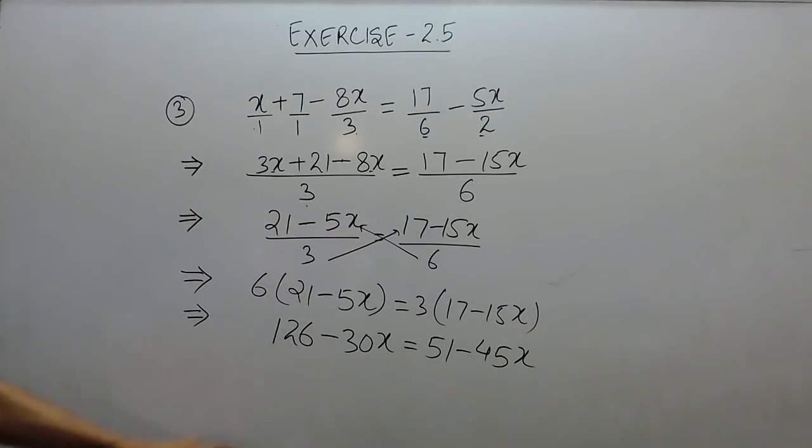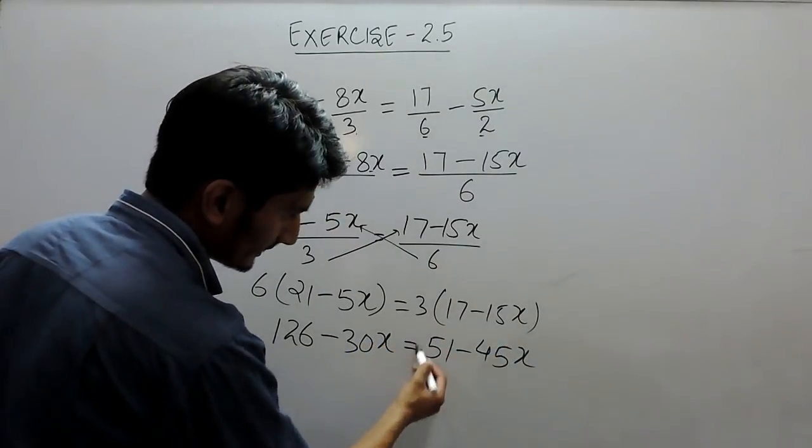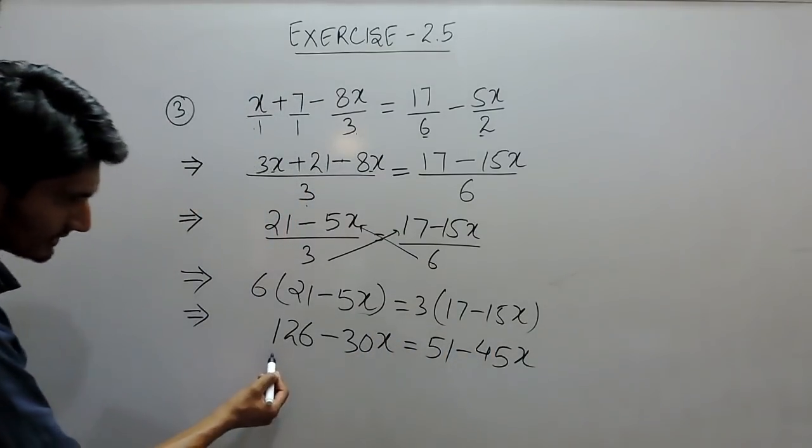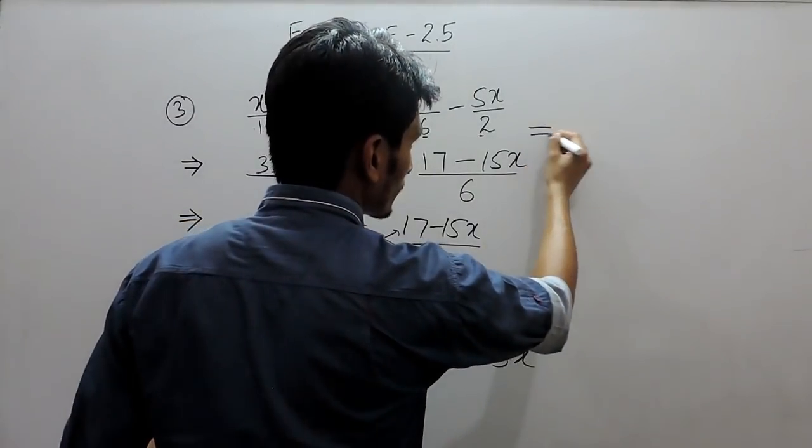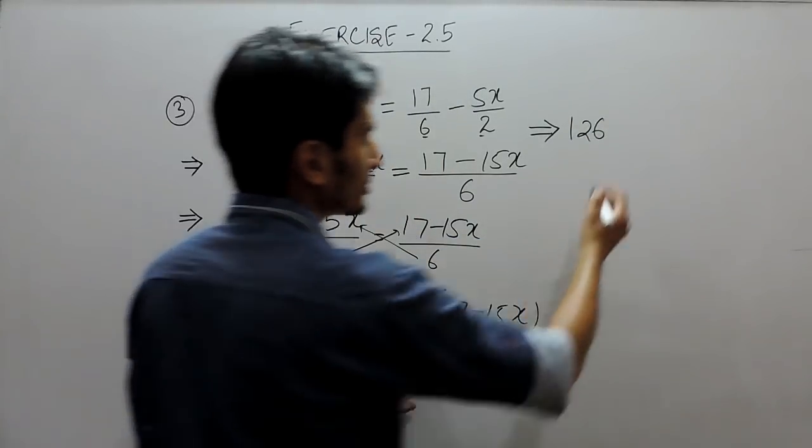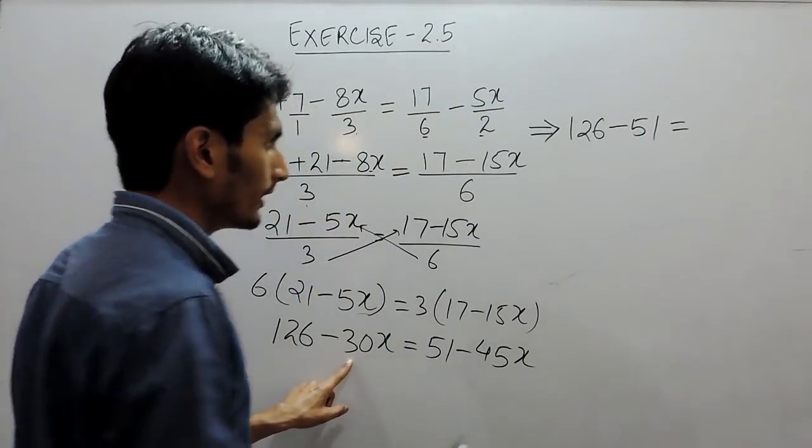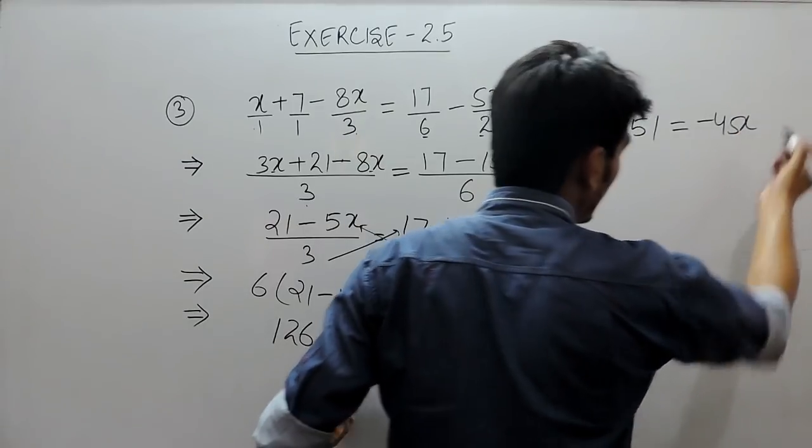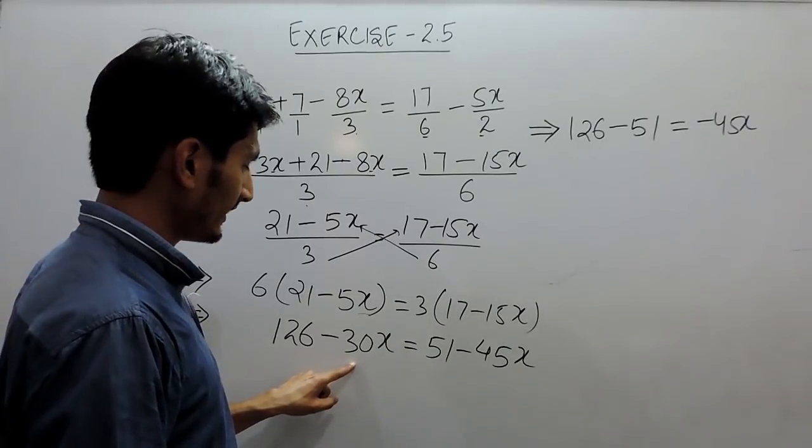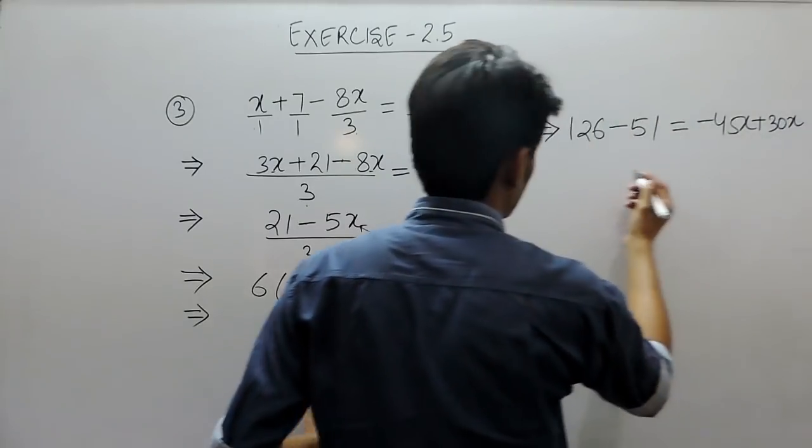Now, we know how to solve this kind of linear equation. You can simply shift this constant to that side, and shift this variable to that side, and shift this constant to this side. So 126 will remain here, and when positive 51 is shifted to this side, it will give minus 51 equals to minus 45x will remain as it is, and minus 30x shifted to that side will become positive 30x.